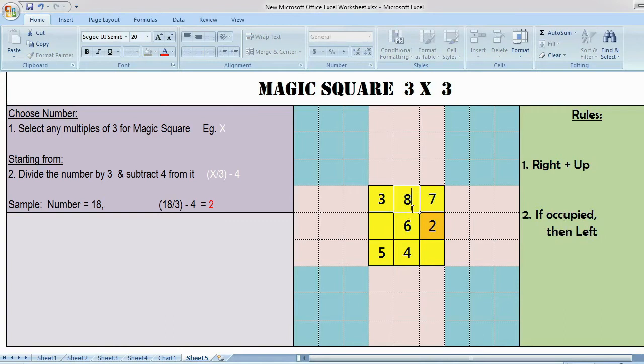Then again right and up, this is the place where I have to keep 9. When I try to match here, this is the place for 9. Then again right up, this is the place. I am placing 10 now.